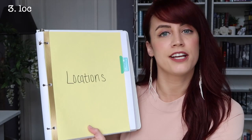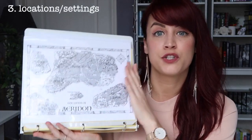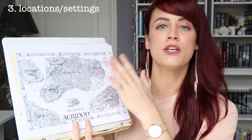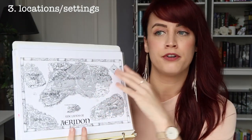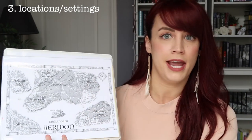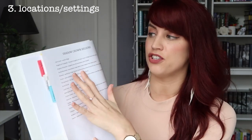The third section is locations — you could also call it settings. Since I have a fantasy world, I have my full map of the Shadow Crown world, called the Lands of Eridon, front and center. I refer back to this whenever my characters travel to another region. On the back I have a legend noting what happened in each region and which book it happened in — a cheat sheet so I don't have to scramble through my 30-page outline to find that one scene.